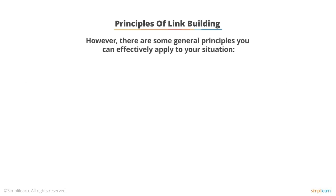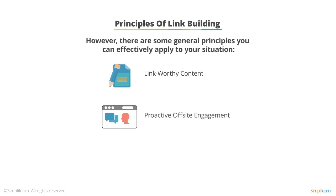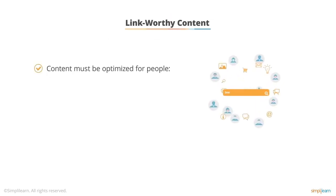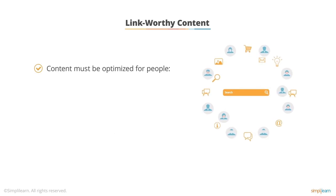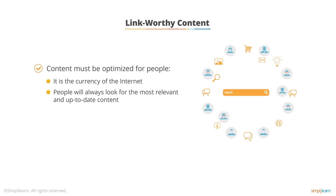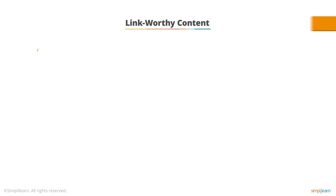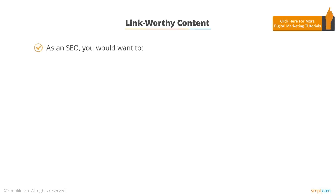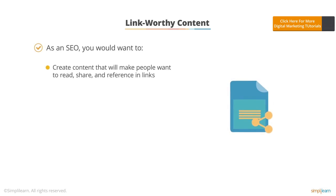These principles are — and I think these are the most clever and important ones — creating link-worthy content, proactively participating in off-site engagement, and utilizing offline relationships. The tried and true method for building links is creating content that's optimized for humans. The currency of the internet is the content itself. Creating content that people are going to want to share with their friends or cite in any kind of paper is a tried and true way of getting links.